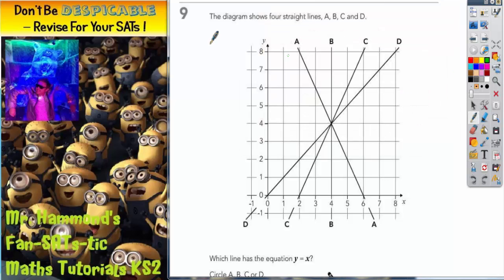Question number nine. It says the diagram shows four straight lines A, B, C and D.